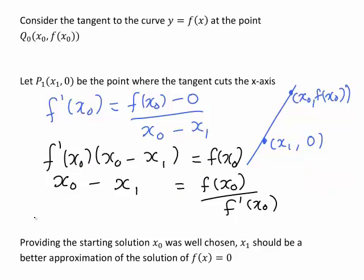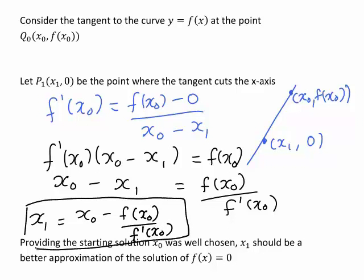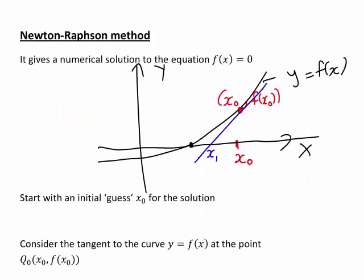Rearranging that further then leads us to x1 equal to x0 minus f of x0 divided by f dashed x0. So what that means is that provided our starting solution x0 was well chosen, x1 calculated in this way based on the value of x0, the value of the function at x0, and the value of the derivative of the function at x0, should give us a better approximation to the solution of f of x equals 0.